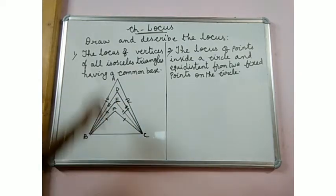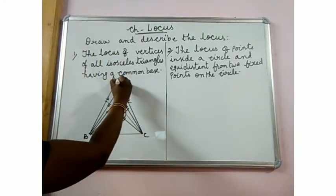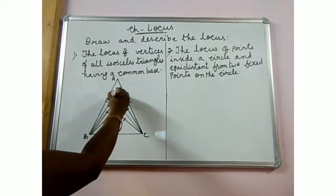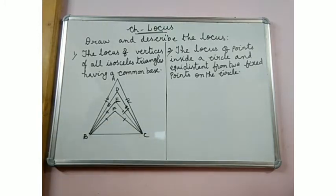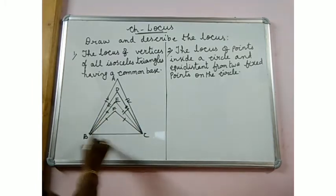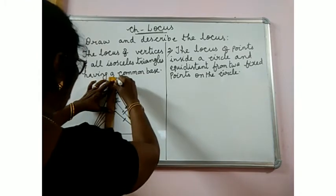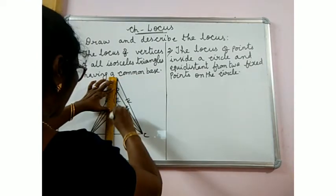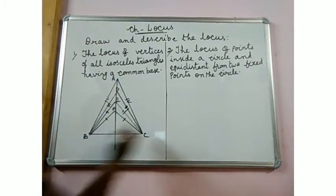We need to find and describe the locus of the vertices: vertex of triangle ABC is A, vertex of triangle DBC is D, vertex of triangle EBC is E, vertex of triangle FBC is F. What is the locus of all these vertices? When you join all these vertices, you will get the perpendicular bisector of BC.